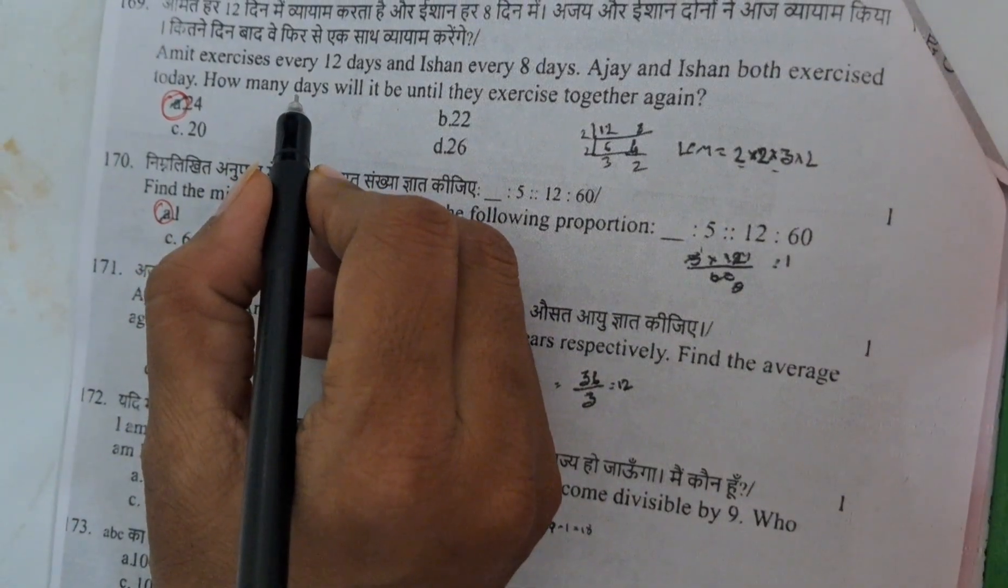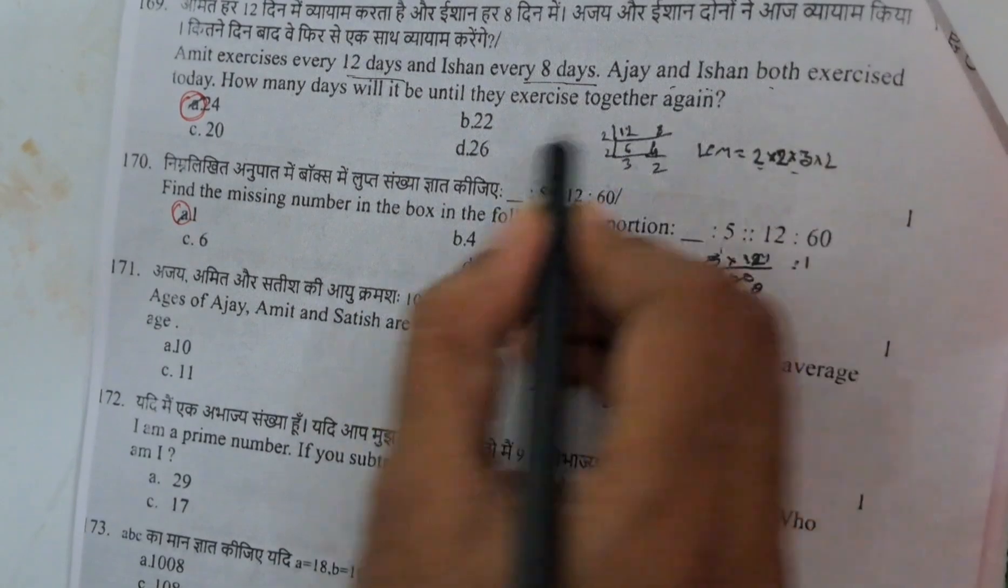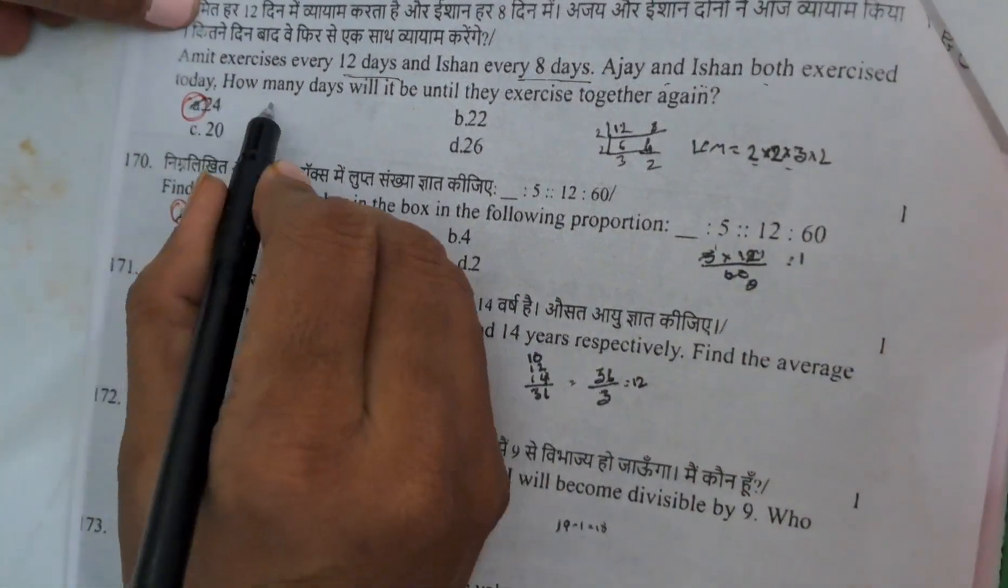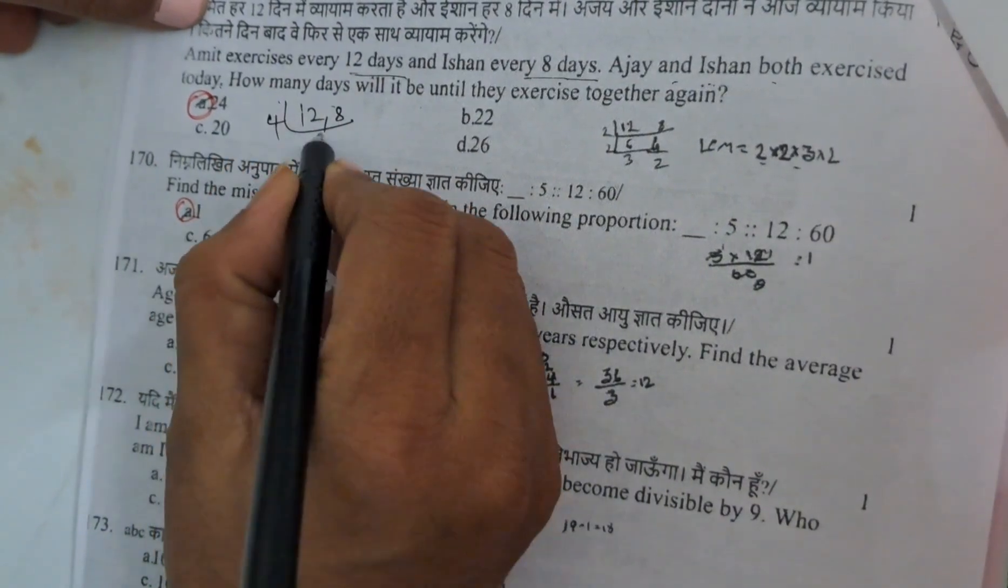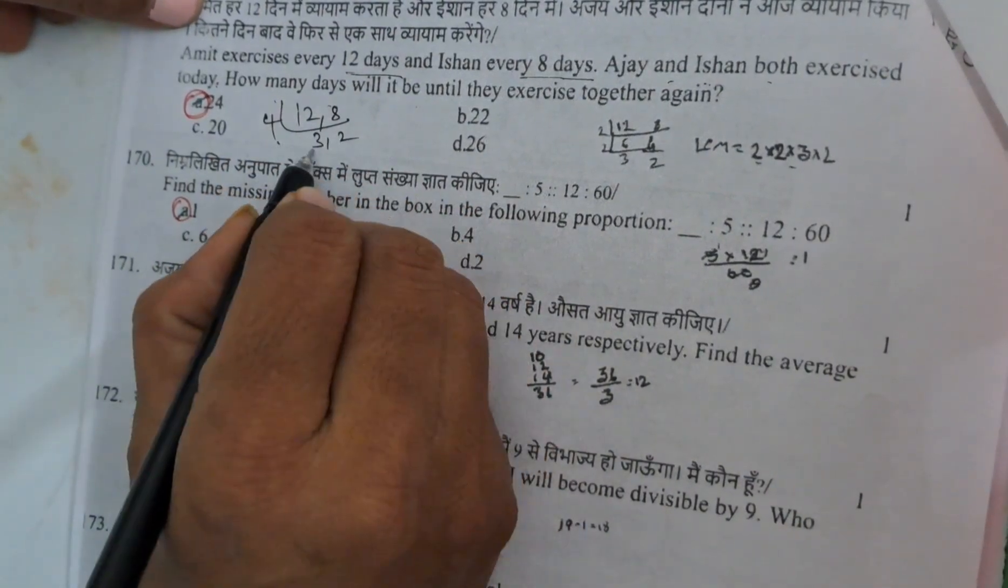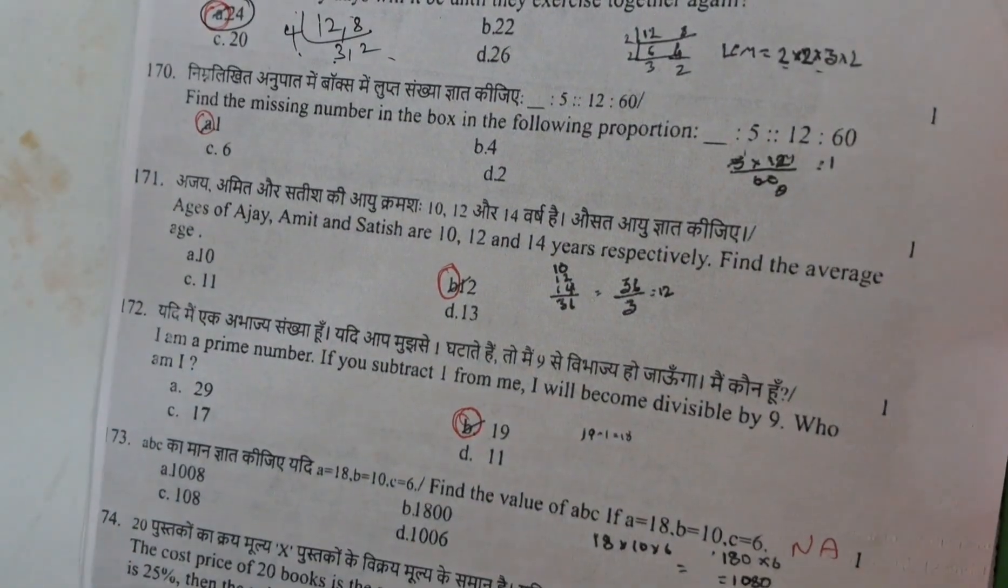Then Amit exercises everyday 12 days, Ajay every 8 days. Ajay and Amit both exercise today. How many days will it? You need to find the LCM. LCM 4, 3 is 2s, then 3, 4 is 12, 12 times 2 is 24. 24 days they will meet. They will do the exercise together.